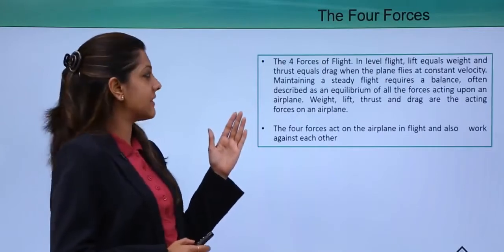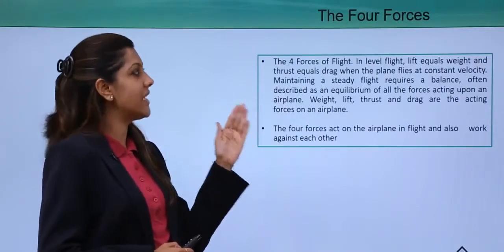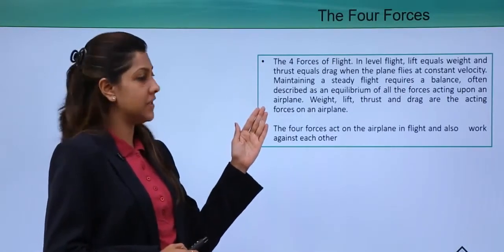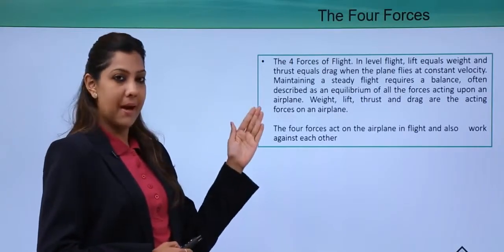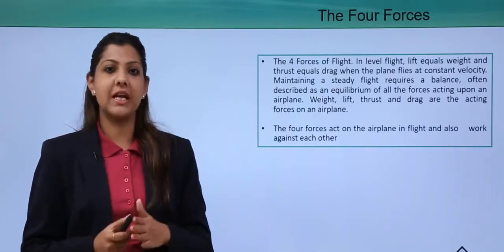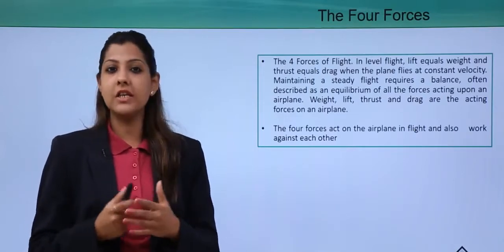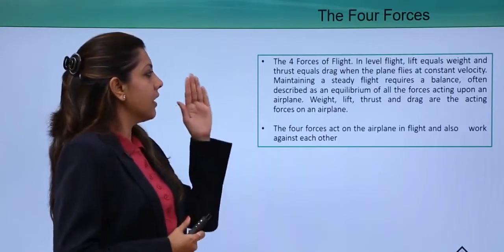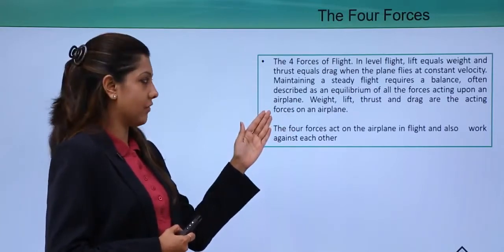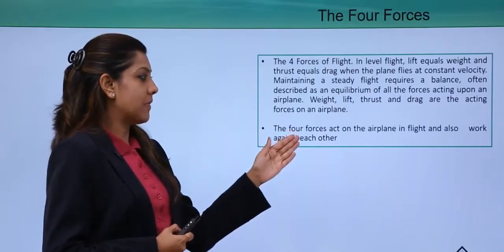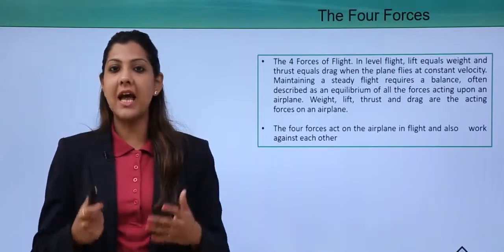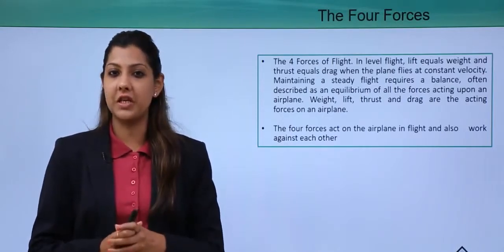In level flight, lift equals weight and thrust equals drag. When the airplane flies at a constant velocity, maintaining steady flight requires an equilibrium of all forces. When the aircraft is in constant motion, all these forces are acting against each other and in balance. If these forces do not act against each other, the aircraft will not be able to take off — hence they need to have an opposite reaction.